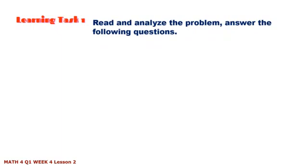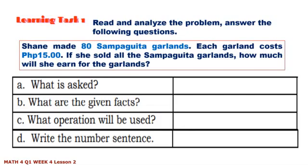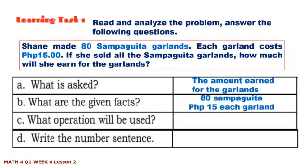Learning Task 1: Read and analyze the problem and answer the following questions. Shane made 80 sampaguita garlands. Each garland costs 15 pesos. If she sold all the sampaguita garlands, how much will she earn? What is asked? The amount earned for the garlands. What are the given facts? 80 sampaguita garlands and 15 pesos each garland. What operation will be used? Multiplication. Write the number sentence: 80 × 15 = n.